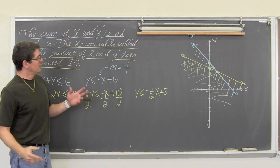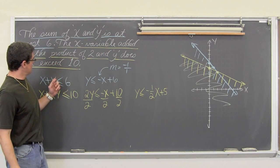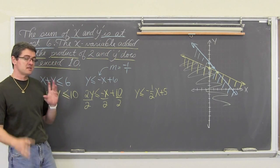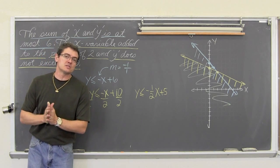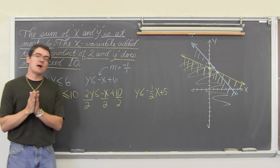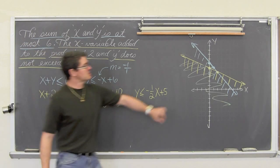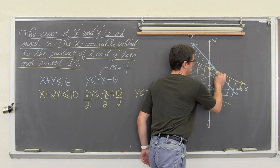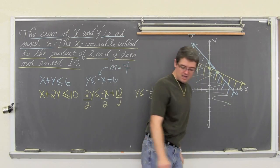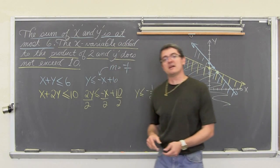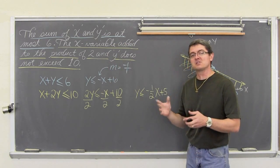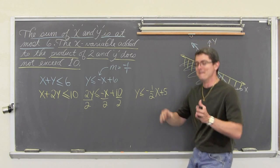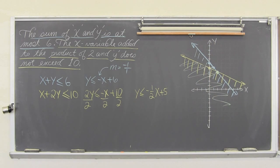With the equal sign on both of these inequalities, each of the lines is part of the solution set as well as all the shaded areas. So this intersection point should be a solid dot. I hope that has helped you understand how to graph systems of inequalities. I am Mr. Tarrou. BAM! Go do your homework.